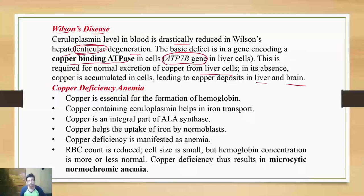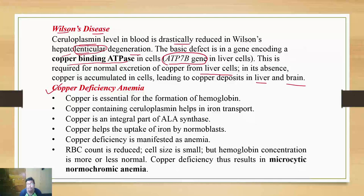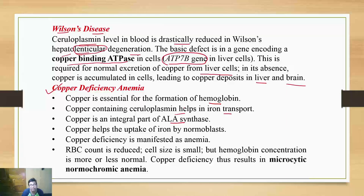The next topic is copper deficiency anemia. You already know iron deficiency anemia, but copper deficiency also produces anemia. At this level, you should be able to say that the main function of copper is to aid iron metabolism. Copper is essential for formation of hemoglobin because ceruloplasmin helps in iron transport and copper is also part of allosynthase, which helps in heme synthesis.